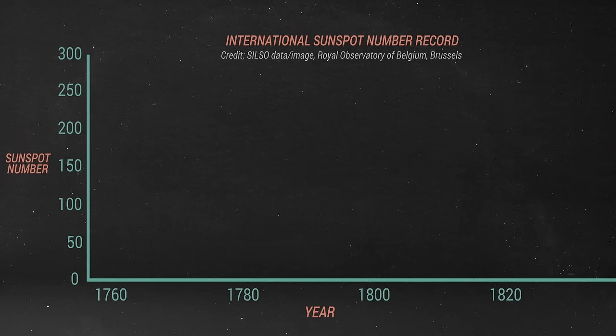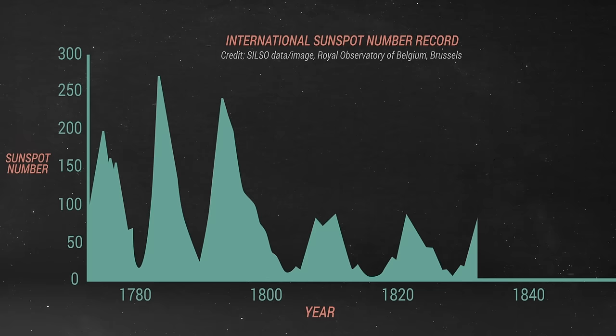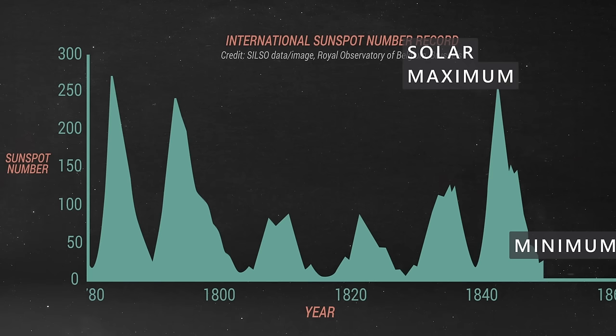During each of these periodic cycles, the number of sunspots will rise to some maximum value and then fall to some minimum value. Today, this is what we refer to as the solar maximum and the solar minimum. The time period between each of these peaks is around 11 years.